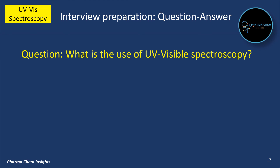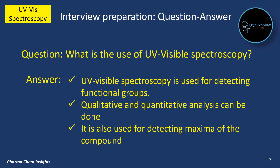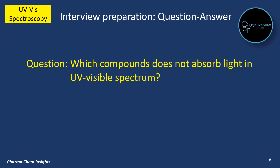What is the use of UV visible spectroscopy? UV visible spectroscopy is used for detecting functional groups. It is used for qualitative and quantitative analysis. It is also used for detecting the lambda max of the compound. Which compound does not absorb light in the UV visible spectrum? The answer is chloral hydrate.